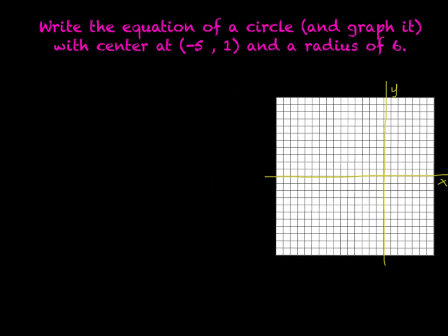Okay, so let's attempt to do one of these. Let's write the equation of a circle and graph it with the center at negative 5, 1 and a radius of 6. So the first thing we need to do is we need to remember that the equation of a circle is x minus h squared plus y minus k squared equals r squared. And this is my h and this is my k.